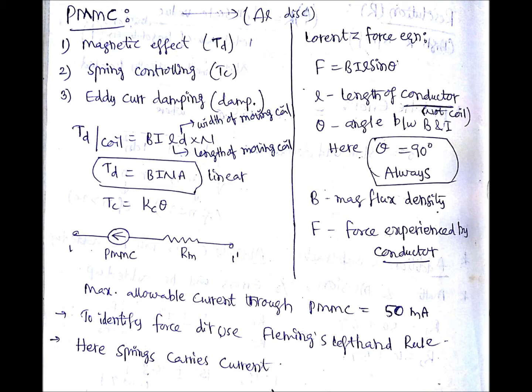Finally you will get TD equals to B I N A. What is A there? That is area which will be given by length L into D. What is the D there? What can be the D when area equals to length into D?